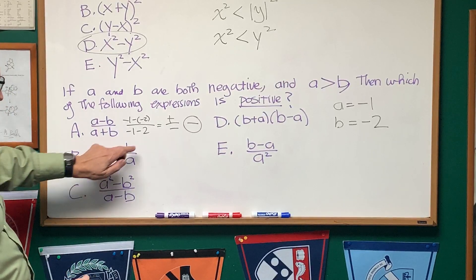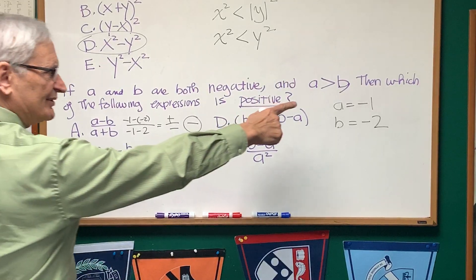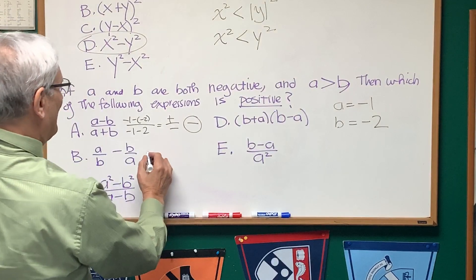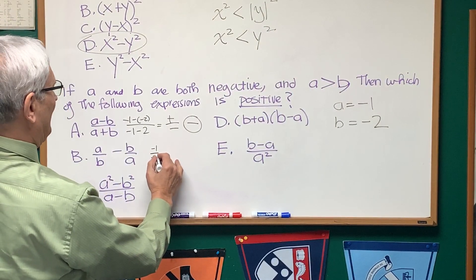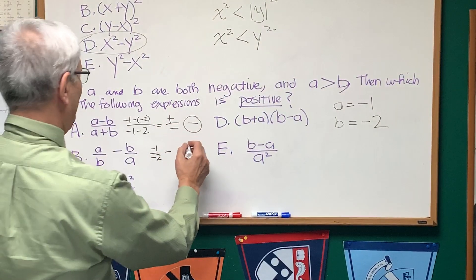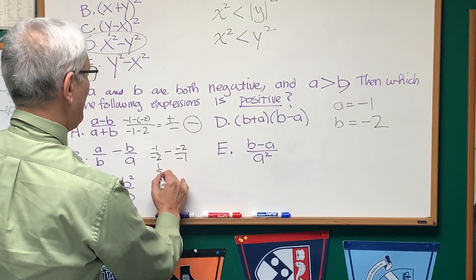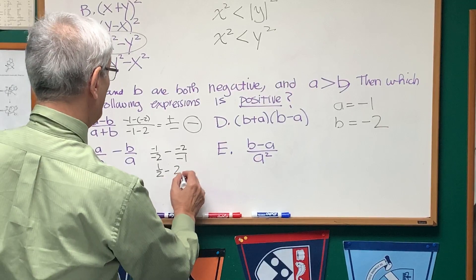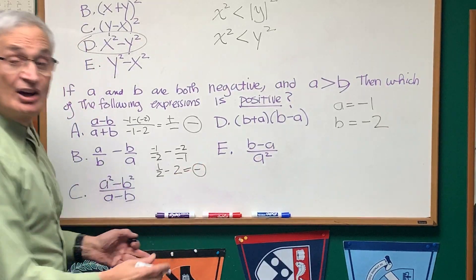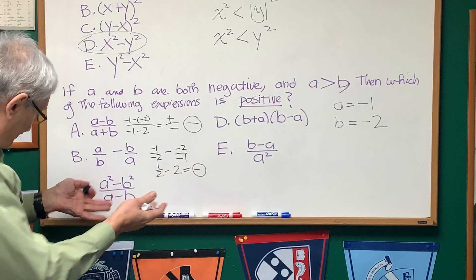A/B - B/A. Well, we take our values for A and B, this would be -1 over -2, minus B over A, which is -2 over -1. That would be one-half minus 2, which is, again, going to be negative.